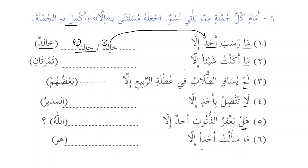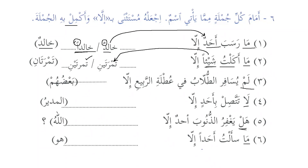'Ma akaltu shayyan illa tamratayni' — I didn't eat anything except for two dates. There are two possibilities: tamratayni can be mansoob, or it is badal from 'shayyan.' Since shayyan is mansoob, tamratani as badal is also mansoob — so both possibilities here give the same ending: tamratani.